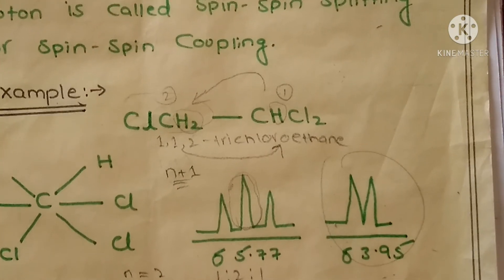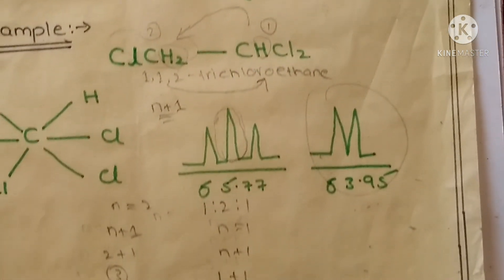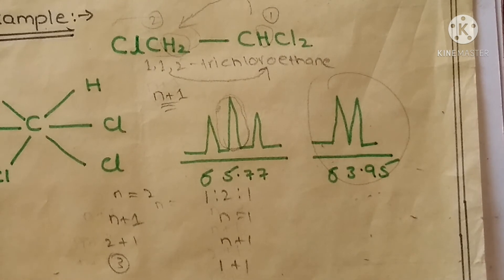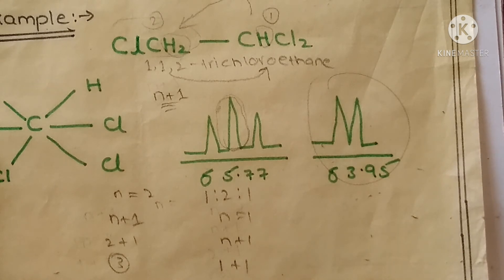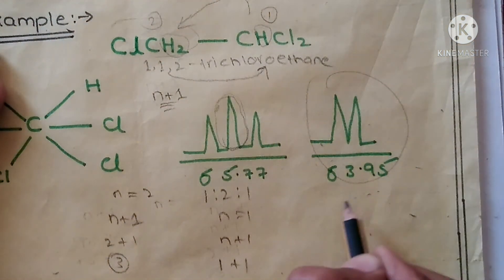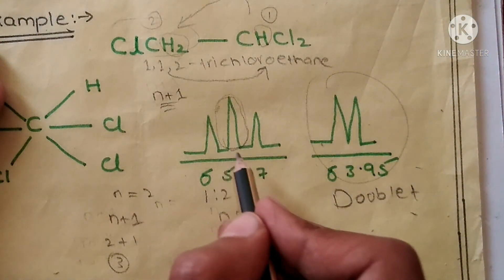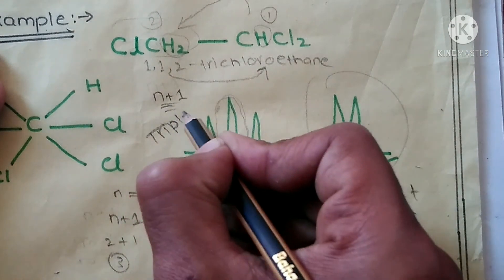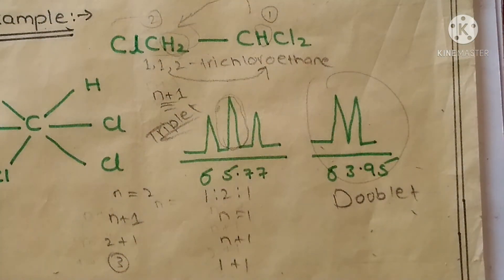So this is the best possible explanation for spin-spin splitting or spin-spin coupling. The compound which has 3 peaks is called a triplet. Those compounds in which 2 peaks are present are called a doublet. And those compounds in which 4 peaks are present are called a quintet, and so on.